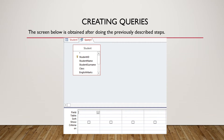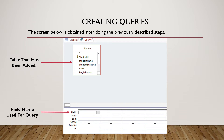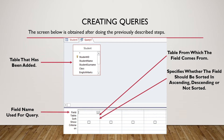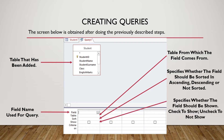The screen obtained after these steps shows the table that has been added — in our case, 'student' — and below it, a table-like interface. The first part is the field name used for the query. The second part is the table from which the field comes. Next is 'Sort', to specify ascending, descending, or no sort. Then 'Show', to specify whether the field should be displayed — check to show, uncheck to not show. And lastly, 'Criteria', to specify conditions used in the query.